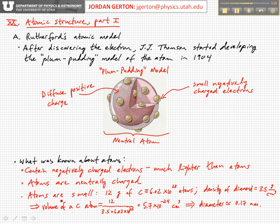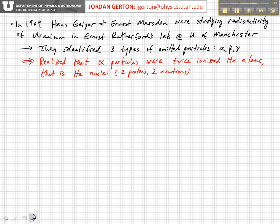The Plum Pudding model was the prevailing model at the time, though it was still very early on. People were interested in testing this model and determining whether it held up against experimental data. One person doing that was Ernest Rutherford at the University of Manchester.